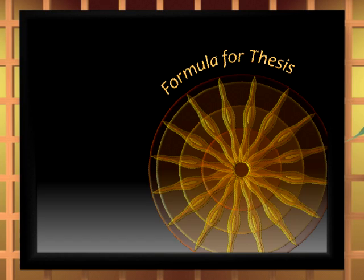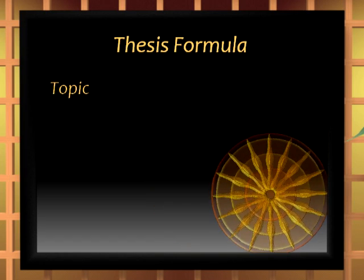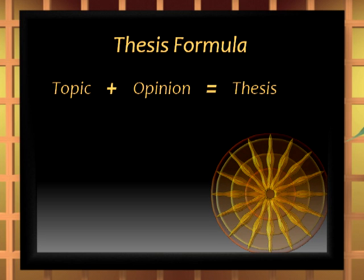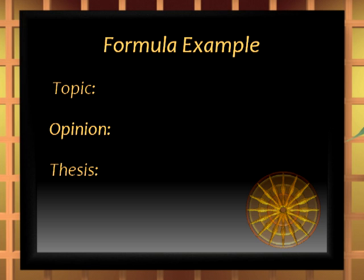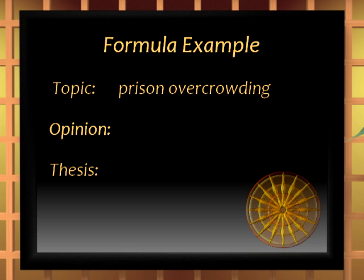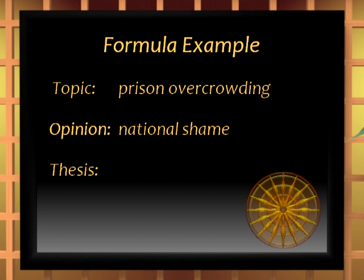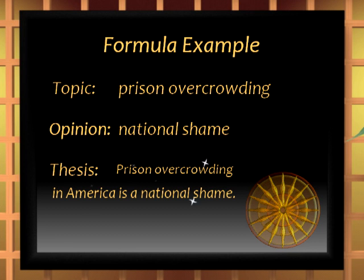Let's review a simple formula for writing a thesis. It goes like this: topic plus your opinion on that topic equals your thesis. Here's an example. Let's say your topic is prison overcrowding. After thinking about and studying the topic, you've arrived at an opinion about it: prison overcrowding is a national shame. Put those two together in one sentence and you have a thesis: prison overcrowding in America is a national shame. It's as simple as that. A thesis is simply your topic combined with the point you wish to make about that topic.